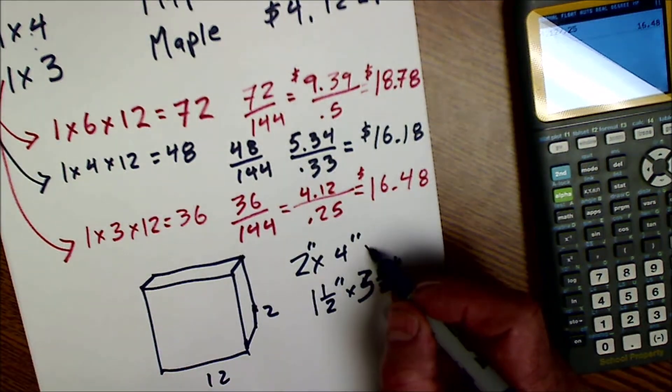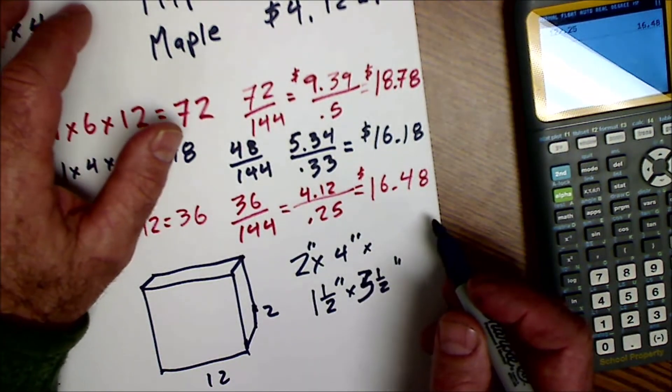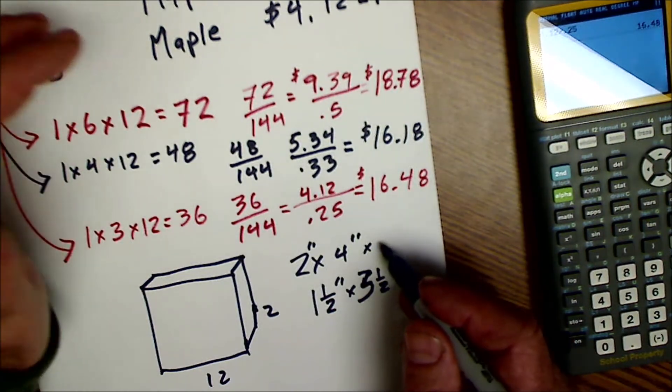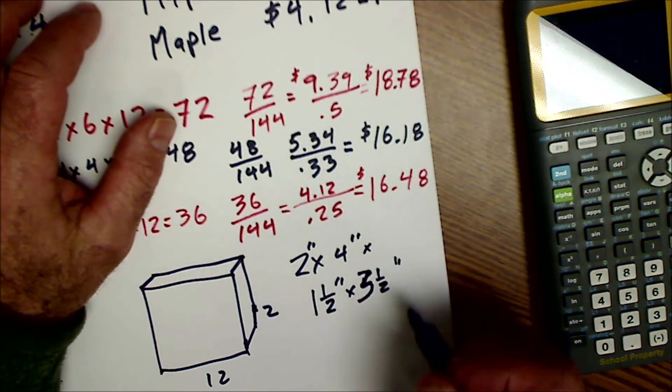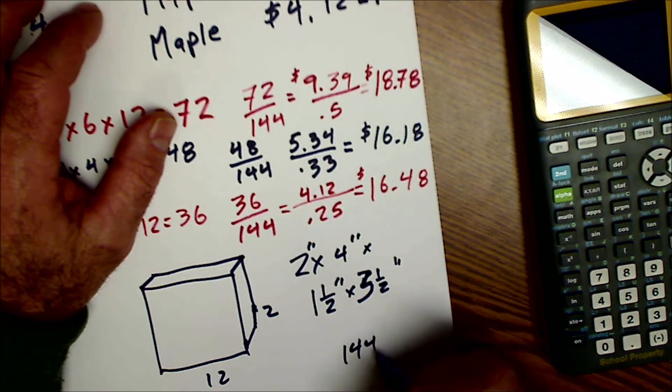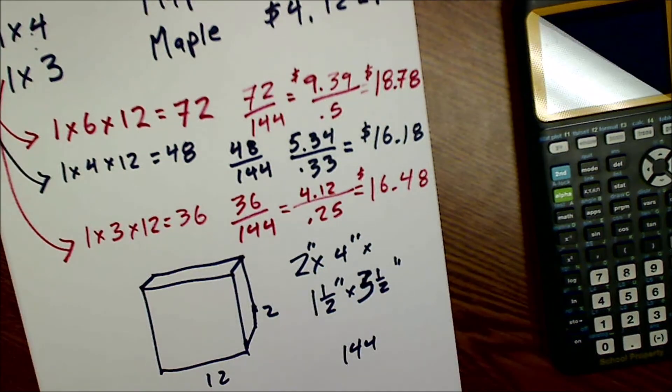But you still use the 2 by 4 in figuring out how many board feet it is. And then you multiply the length in inches. So if you're buying 20 feet of it, you've got to take that 20 times 12, and then you take that whole thing and divide by 144. And that will give you how many board feet the board is.